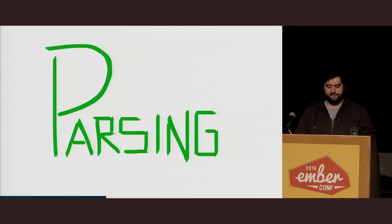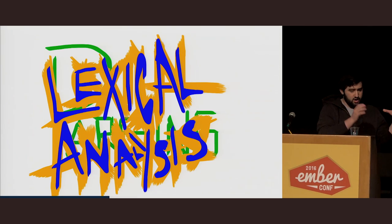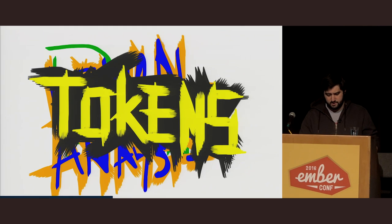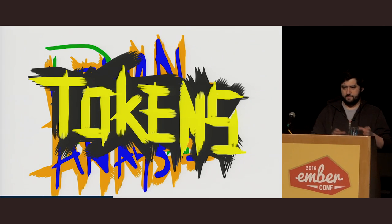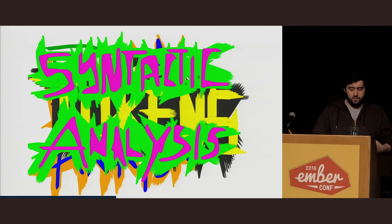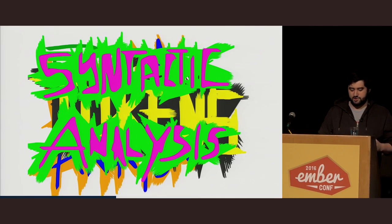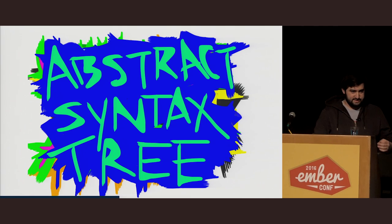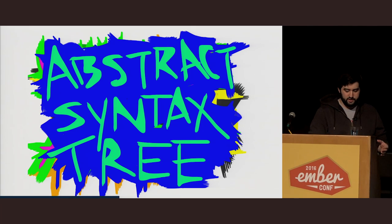Parsing gets broken down into a couple different phases. The two biggest ones are lexical analysis and syntactic analysis. Lexical analysis is pretty simple — it takes the raw code and splits it up into these little things called tokens. Tokens are an array of tiny little objects that describe an isolated piece of the syntax. They could be numbers, labels, punctuation, operators, whatever. Syntactic analysis will then take these tokens and reformat them into a representation that describes each part of the syntax and their relation to one another. This is known as an intermediate representation or an abstract syntax tree.